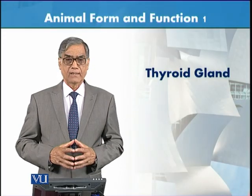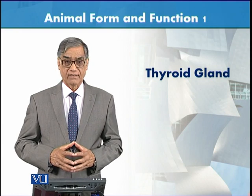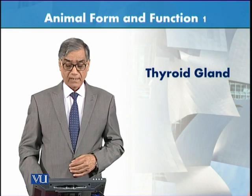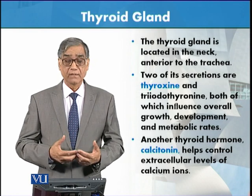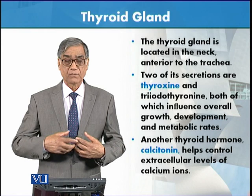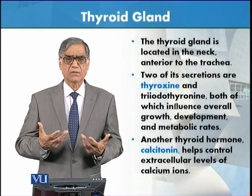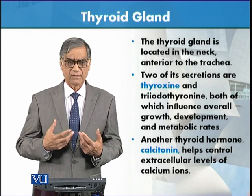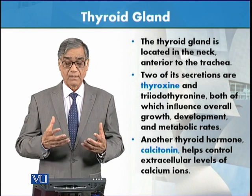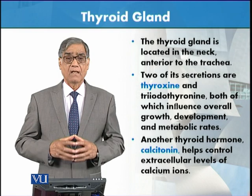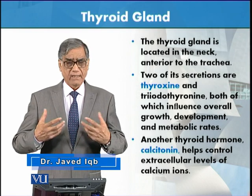We have a very important gland related to the thorax. Its position is located in the neck, anterior to the trachea — this is the windpipe. This is the location. Now we will see diagrammatically where this thyroid gland is present. The thyroid is one gland.